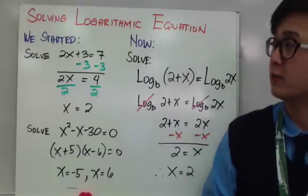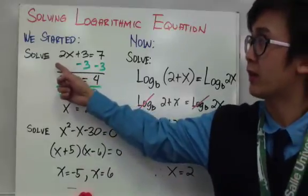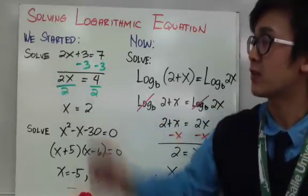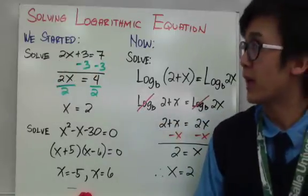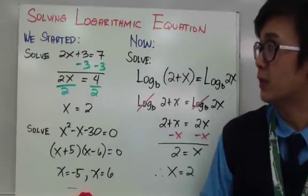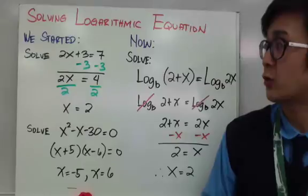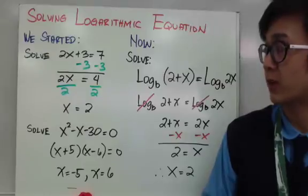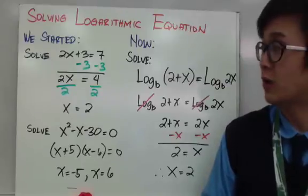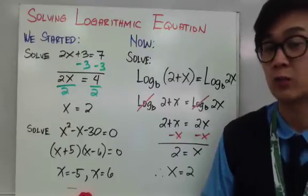Let's start with the linear equation. We have a simple linear equation like 2x plus 3 equals 7 and solving for x is pretty simple. Just subtract 3 on both sides, then divide both sides by 2. Therefore x is equal to 2. That's how we solve a linear equation.